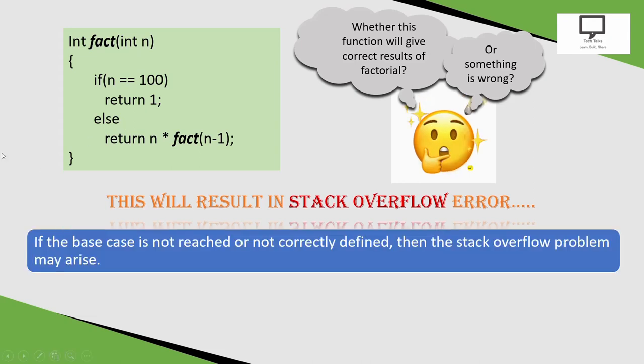If the base case is not reached or not correctly defined, then the stack overflow problem may arise. Which one is the base case? This one is the base case. What have we mentioned here? If n equals 100, then return 1. Otherwise, call the factorial function recursively with the current n minus 1.